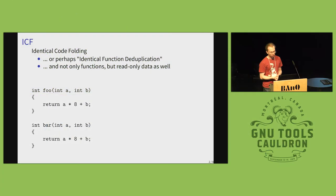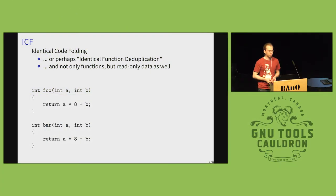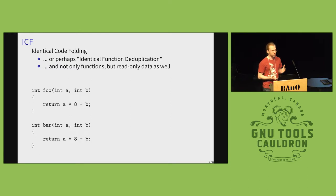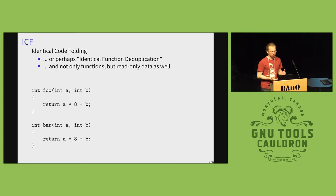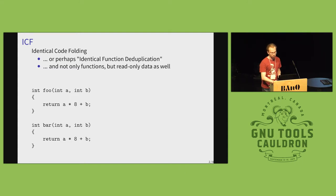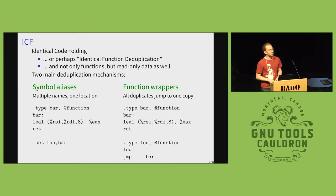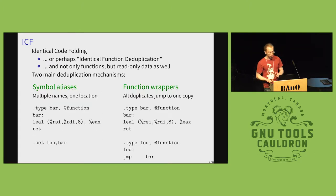In GCC there is an optimization called ICF, standing for Identical Code Folding, that tries to find functions that are duplicates of each other and tries to eliminate all of the copies, and for those public functions that should remain, redirect the original symbol to the sole remaining copy.